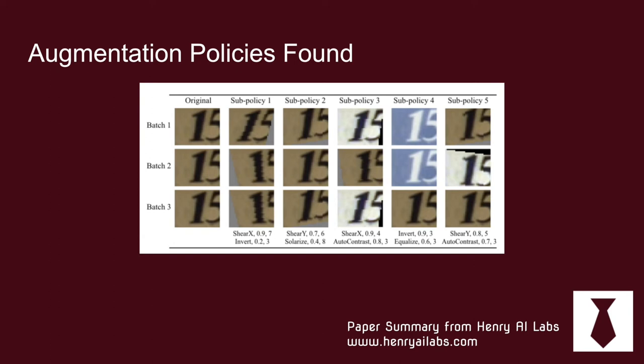This is an example of how these augmentation policies worked out. This is one example of a policy that shears it and then inverts it. You see the probability of applying it and the magnitude of how much it distorts the image when it does get applied.